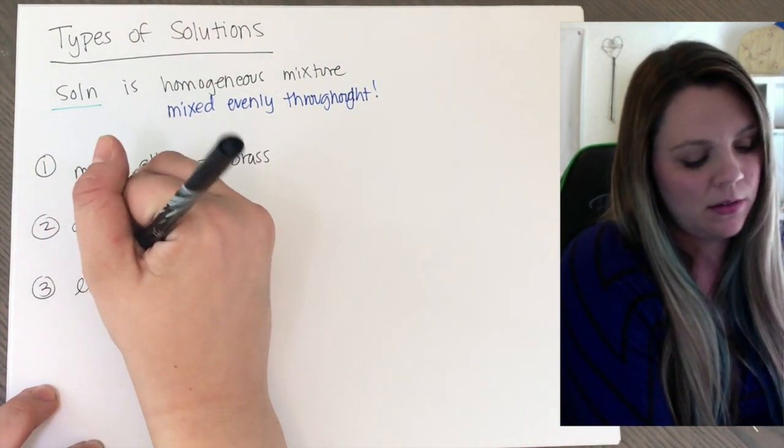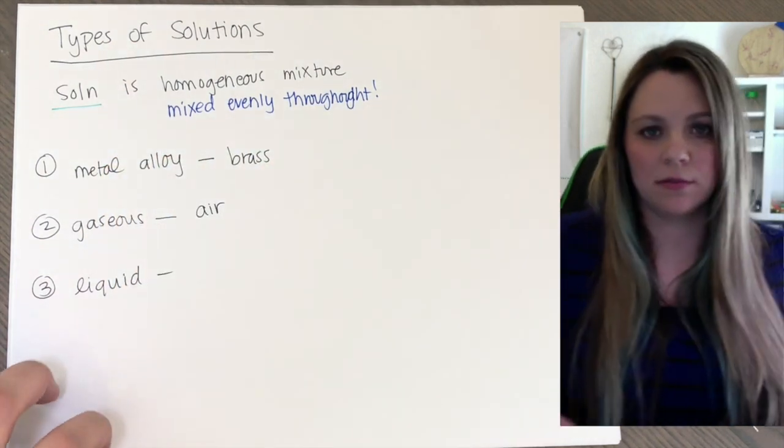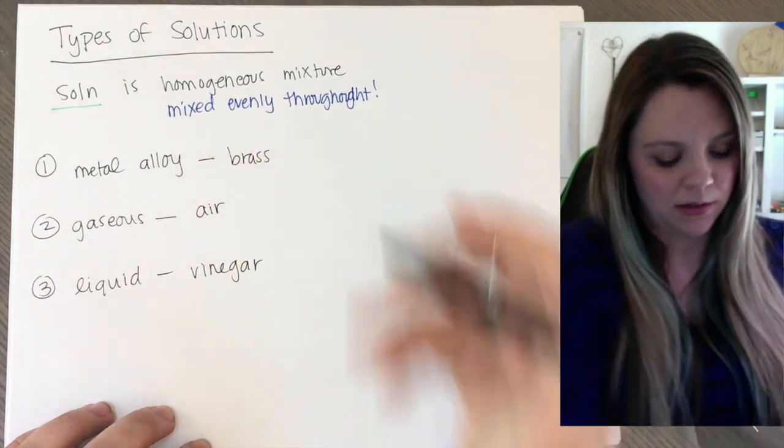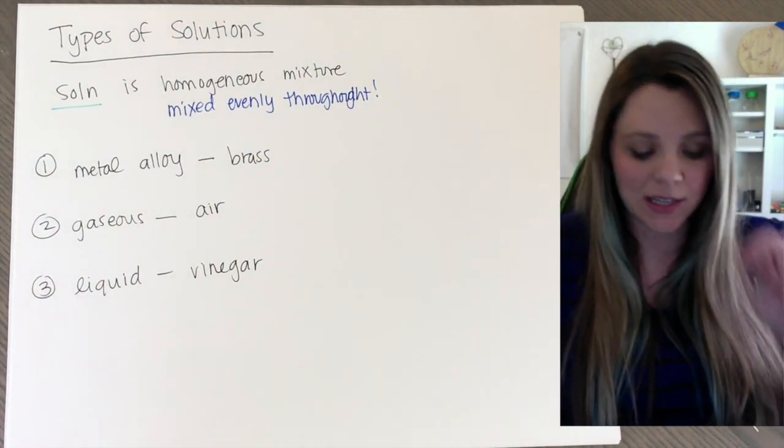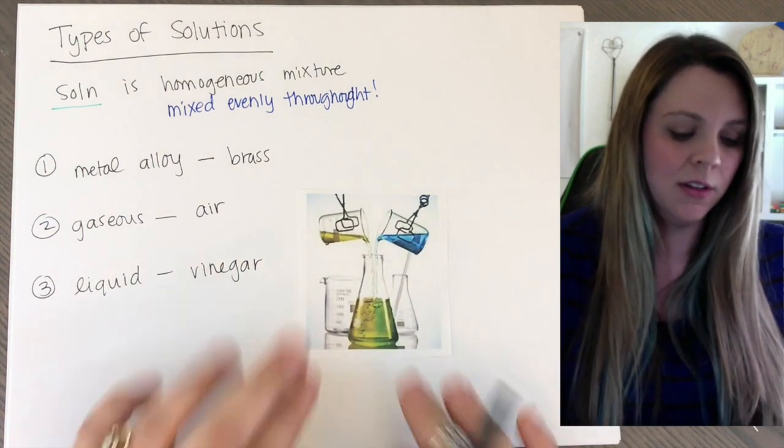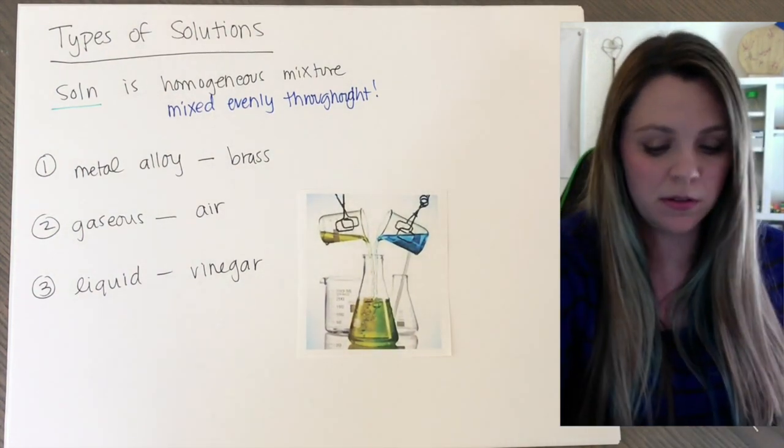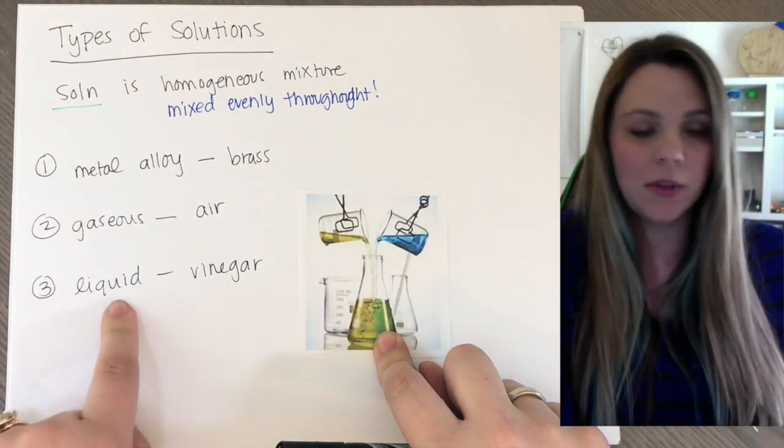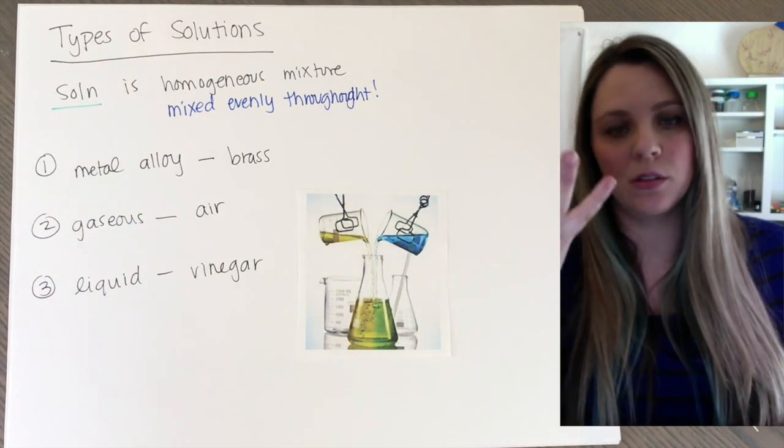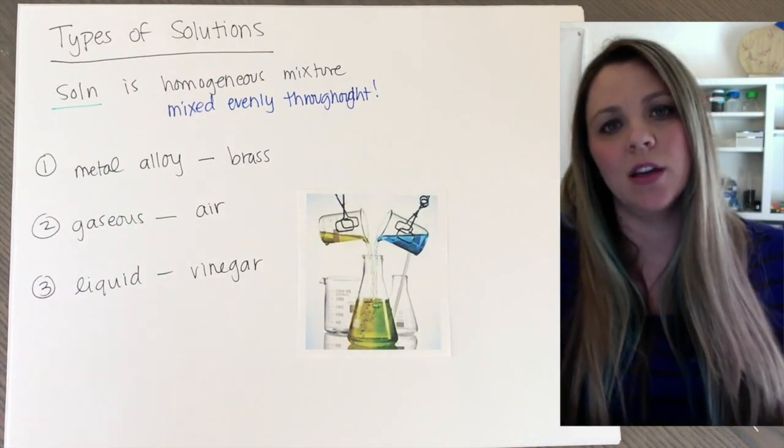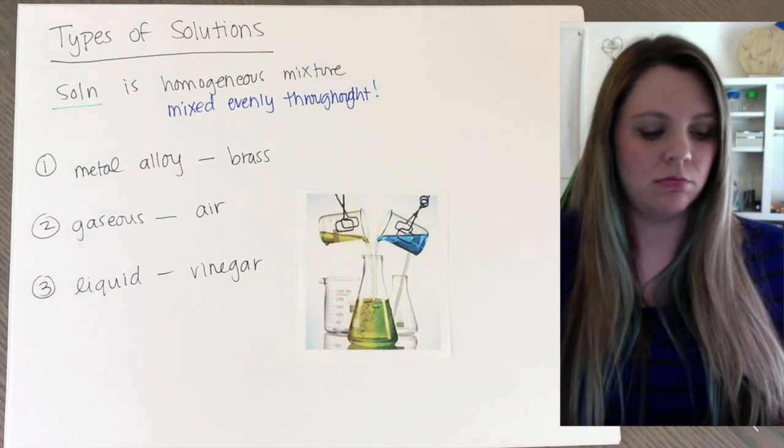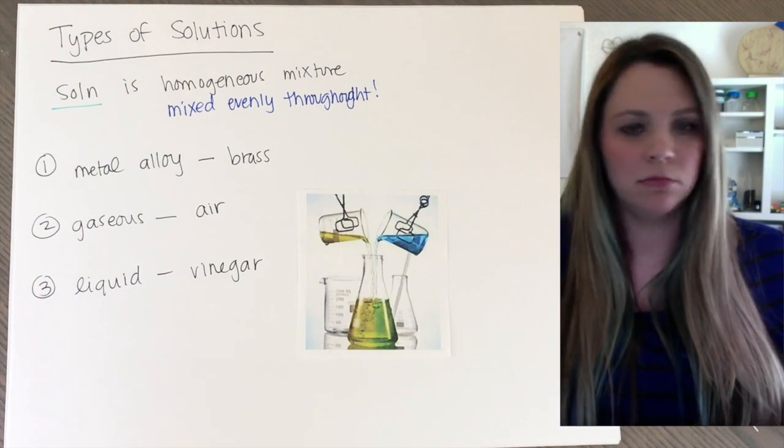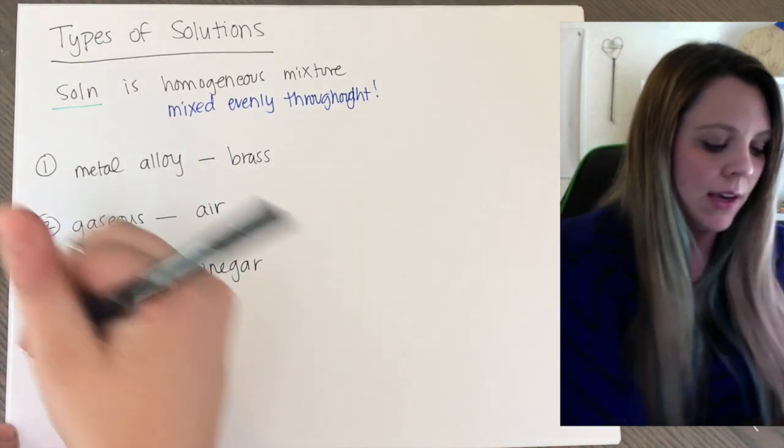I can also have a liquid solution. A really easy one for that would be vinegar. Vinegar is actually two different liquids mixed together. I have two liquids that are being mixed together. So that would be a liquid solution. What vinegar is, is I think it's like 95% water and 5% acetic acid. So you're mixing two liquids together to make another solution.